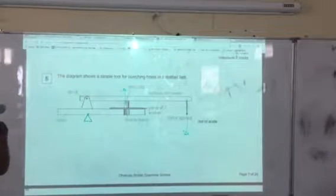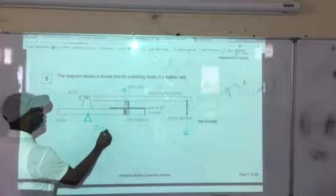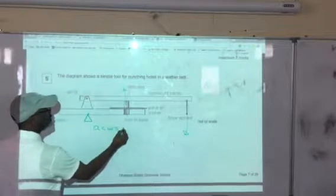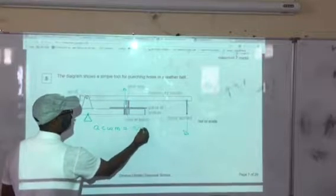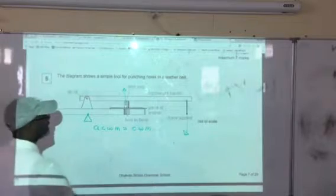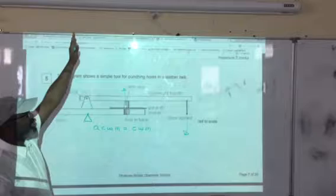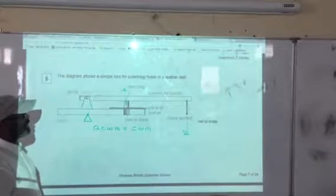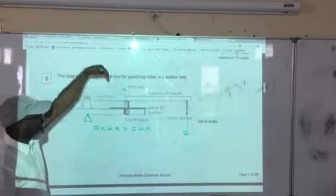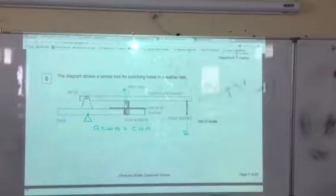By the principle of moment, anti-clockwise moment should be equal to clockwise moment. If you look at this setup, it's a balanced setup in the sense that if you apply a force here, there is another force opposing it. But if that force is hard enough, you will press the steel peg inside the leather belt.